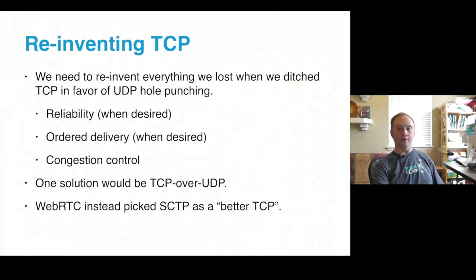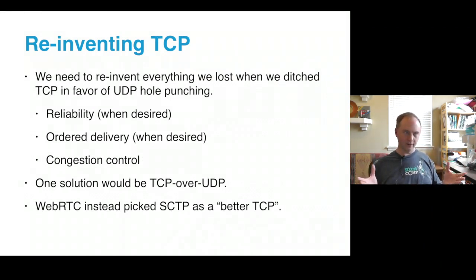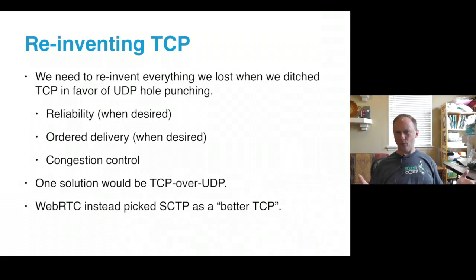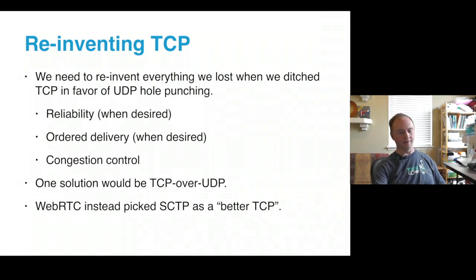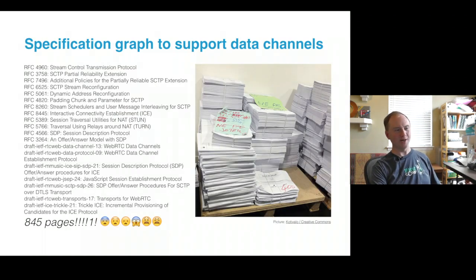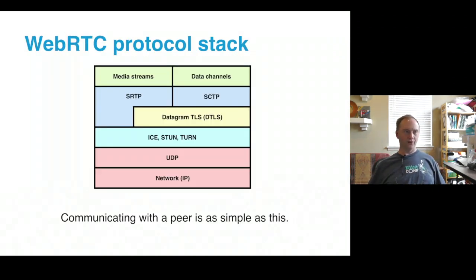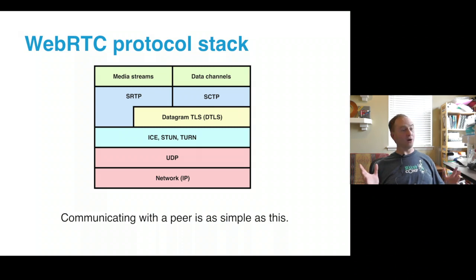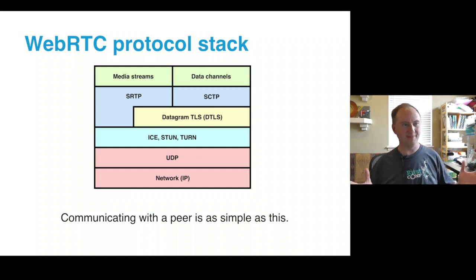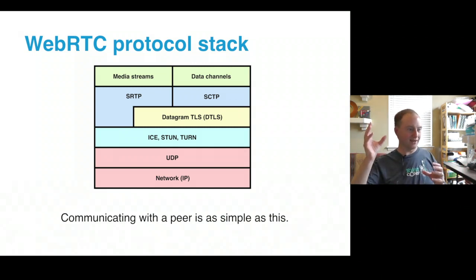We're back to reinventing the world on top of UDP. The WebRTC people had to come up with a solution — they needed reliable delivery and congestion control. One way to do this would be to layer TCP on top of UDP, but they said, while we're at it, let's ditch TCP and go with this somewhat newer protocol called SCTP, and use that as a better TCP. Unfortunately it's still quite complicated. Just for the data channel part of WebRTC, it's well over 800 pages of documents to sift through. The WebRTC protocol stack includes ICE, STUN, TURN, DTLS, SRTP, SCTP, and the WebRTC data channel protocol — it's as simple as this, but that's really a bit of sarcasm.